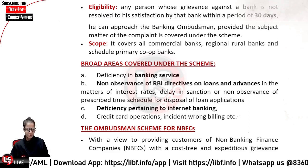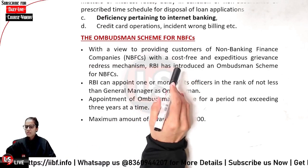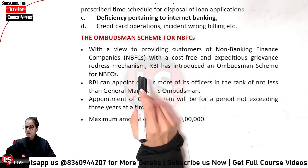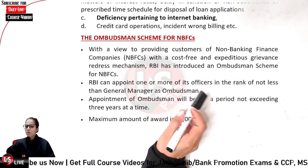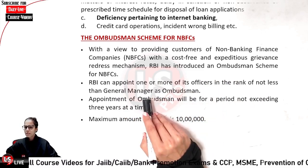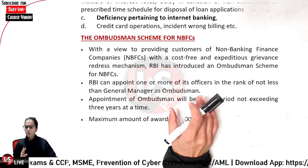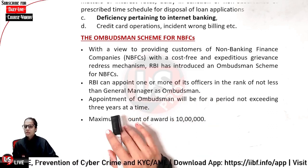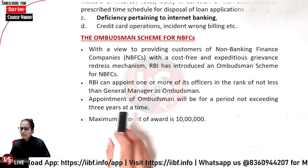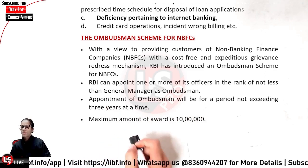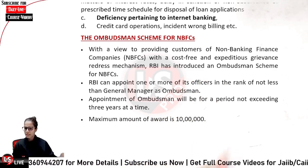Next, we have the Ombudsman Scheme for NBFCs — Non-Banking Financial Companies. With a view to provide customers of non-banking finance companies with a cost-free and expeditious grievance redressal mechanism, RBI has introduced the Ombudsman Scheme for NBFCs. RBI can appoint one or more of its officers of a rank not less than General Manager as Ombudsman. The appointment will be for a period not exceeding 3 years at a time. The maximum amount of award in case of NBFCs is 10 lakh.